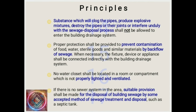Fourteenth: Substances which will clog pipes, produce explosive mixtures, destroy the pipes or their joints, or interfere unduly with the sewage disposal process shall not be allowed to enter the building drainage system. Fifteenth: Proper protection shall be provided to prevent contamination of food, water, sterile goods, and similar materials by backflow of sewage; when necessary, the fixture, device, or appliance shall be connected indirectly with the building drainage system. Sixteenth: No water closet shall be located in a room or compartment which is not properly lighted and ventilated.